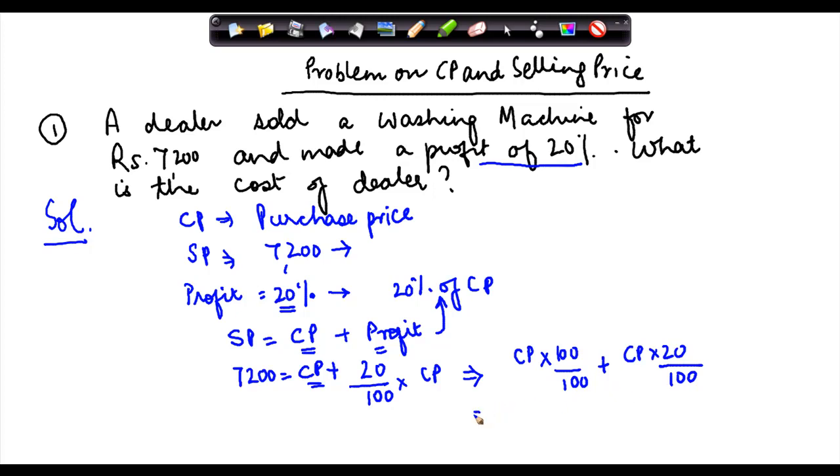Now if I were to take 100 as the common, then I would get 100 CP plus 20 CP which makes it 120 by 100 CP. This goes into this, I get 5 here and I get 6 here. So 7200 is equal to 6 upon 5 times CP.